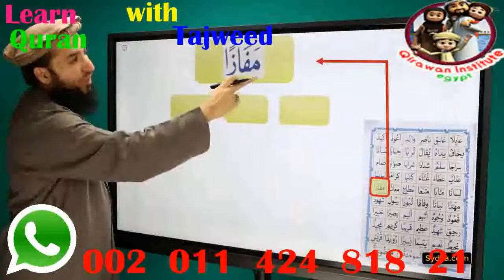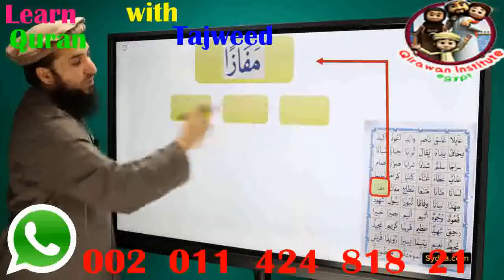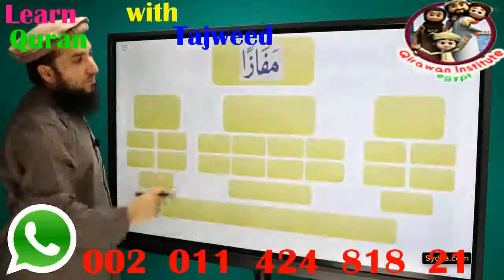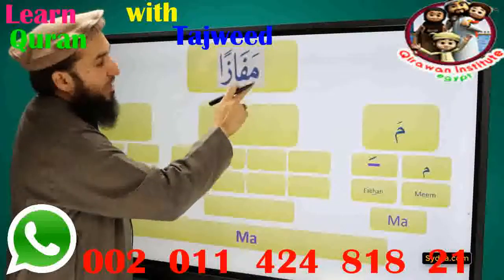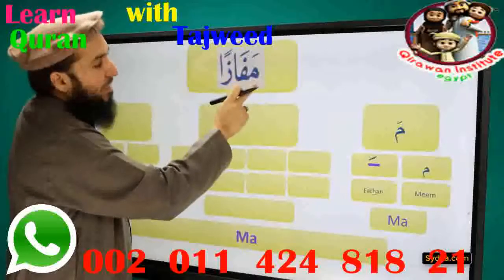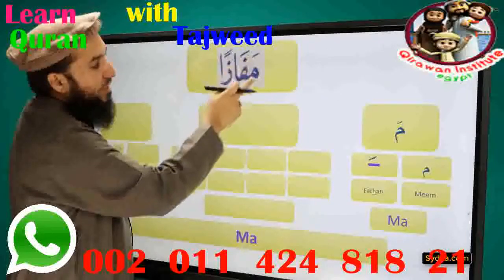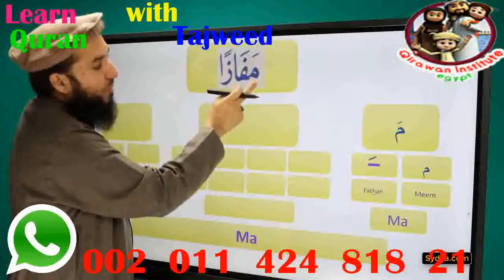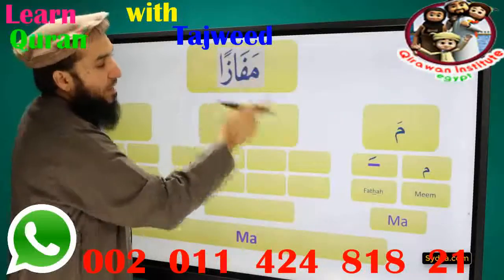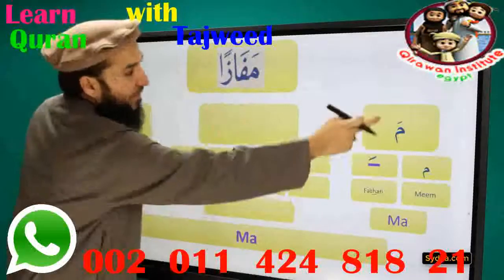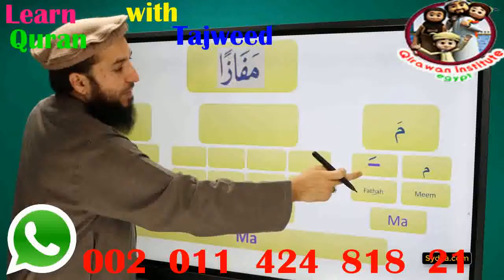The next word we have is Mafazan. It can be divided into three syllables. The first syllable we have is Mim-Fath-Ama. Mim is a light letter. It has Fath-A on top of it and it will be prolonged for one count. Mim-Fath-Ama.